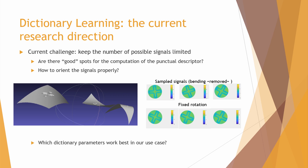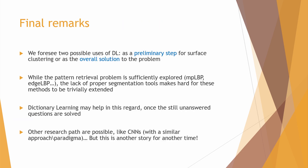Another problem I'm still dealing with is the parameters of the dictionary I should use in this case. The sparsity, the size of the dictionary, etc., are all parameters that should be fixed before or after training the dictionary. These are things I'm currently working on, and I hope they will give satisfying results.